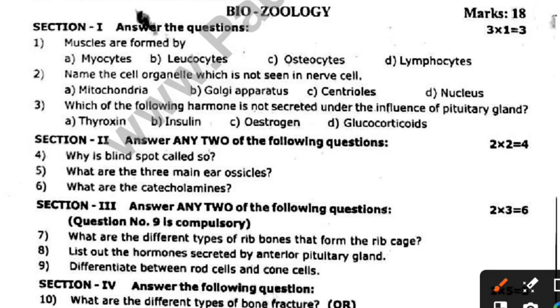Muscles are found by das, named the selagani, which is not seen in the nose. Which of the following hormones is not secreted under the influence of the pituitary gland?